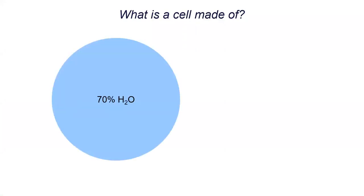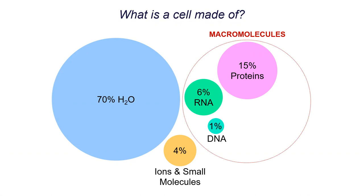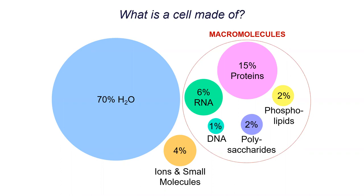If you take a look at a cell, it's mostly water. It has ions and small molecules — things like sodium, potassium, calcium. The rest is made out of macromolecules: 15% proteins, a little bit of RNA, a little bit of DNA, usually some carbohydrates — that's what a polysaccharide is — and then phospholipids, which are part of the membrane. This is why it's important to talk about all these things and understand what they're doing in the actual cell and a little bit about their chemistry.